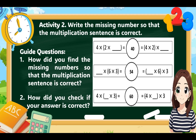For Activity 2, write the missing number so that the multiplication sentence is correct. For the first set: 4 times 2 times blank equals 40. Multiplying 4 times 2 gives 8. What do we multiply by 8 to get 40? The answer is 5. So 4 times 2 times 5 equals 40, verified as 2 times 5 equals 10, times 4 equals 40.